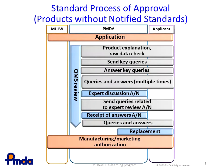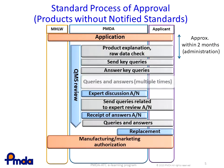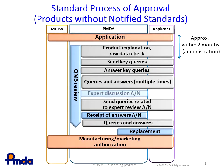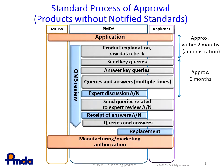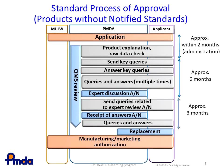Meanwhile, in the review category of non-standard products and companion diagnostics, expert discussion is held as needed during the review, and the approval process may take some extra time, as shown in this slide. In this case, after the discussions on key queries and answers between the PMDA and the applicant, expert discussion will take place, as needed, approximately within six months from the initial key queries from the PMDA. Then, further queries raised in the expert review will be sent to the applicant, and Q&A will continue for about three months.